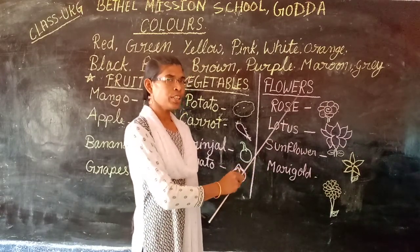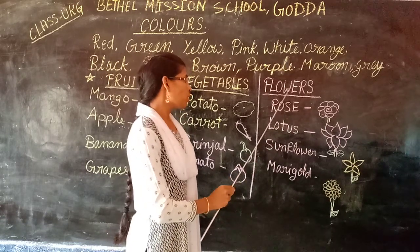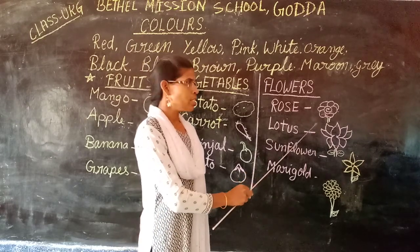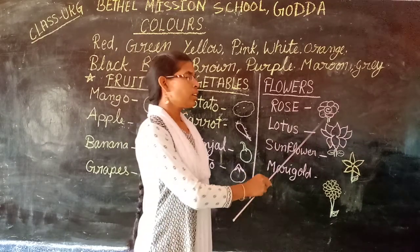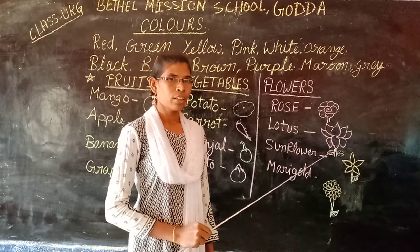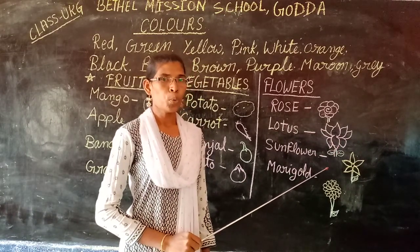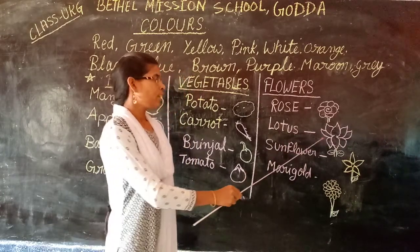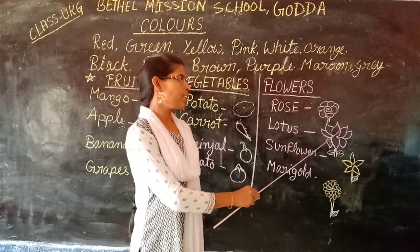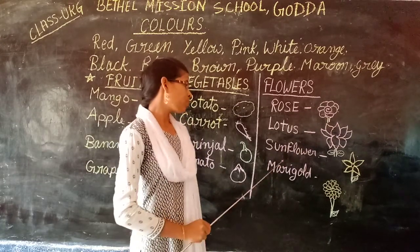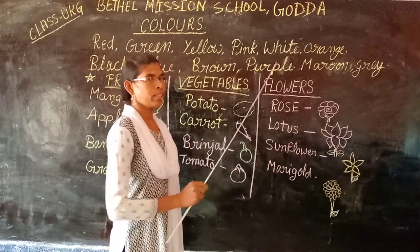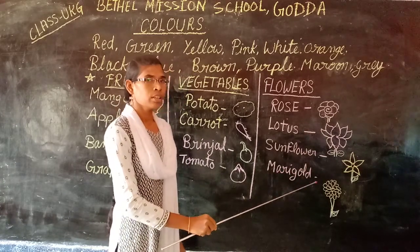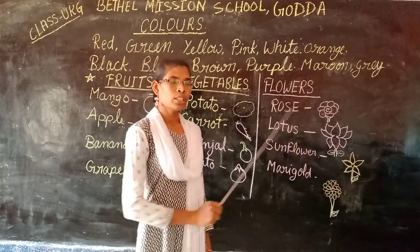Flowers. Let us see the flowers. Rose. R-O-S-E. Rose. Rose has different colors: red, yellow, white, orange, blue, and black. Lotus. It is pink and white in color. Sunflower. It is yellow in color. Marigold. It is yellow in color.